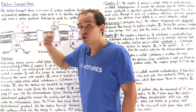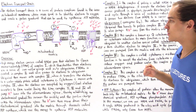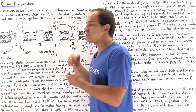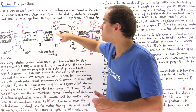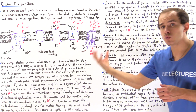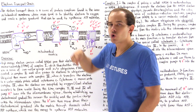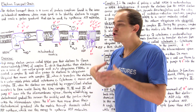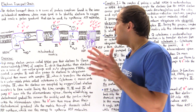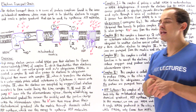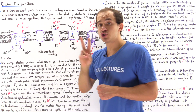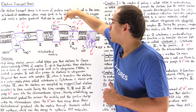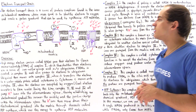Protein complex 3, also known as cytochrome reductase or Q-cytochrome C oxidoreductase, functions to transfer electrons from the carrier molecule ubiquinol to a different electron carrier known as cytochrome C. Cytochrome C is a small, water-soluble protein that carries electrons from complex 3 to complex 4. During this process, complex 3 pumps 2 hydrogen atoms from the mitochondrial matrix into the intermembrane space, further building the electrochemical gradient.